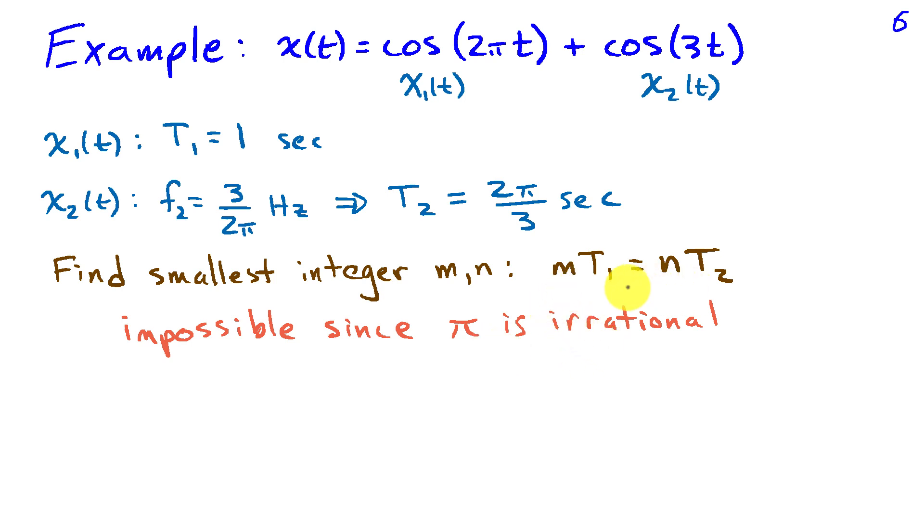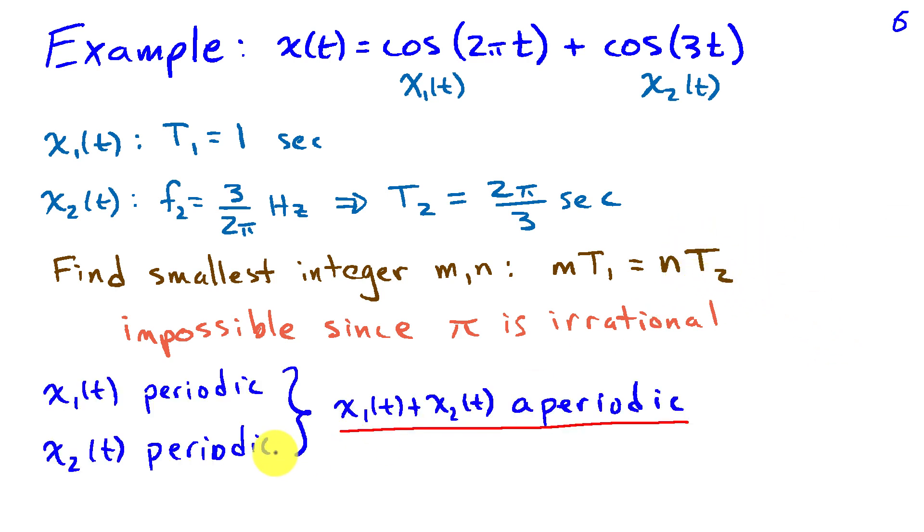So there aren't any integers that can take care of canceling out the pi that's part of t2. So this example illustrates a case where x1 is a periodic signal, x2 is also a periodic signal, but the sum is not periodic.